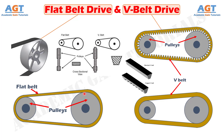On the other hand, V-belt has a trapezoidal cross-section with width comparable to height. It employs a pulley having a corresponding V-groove to accommodate the V-belt. Both the side surfaces of the belt remain in contact with the pulley. The flat belt is a jointed belt, whereas V-belt is jointless.